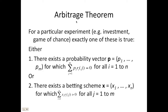Now we move to the Arbitrage Theorem. For a particular experiment, exactly one of two things is true: either there exists a probability vector p = (p_1, ..., p_m) for which the sum of p_i times r_i(j) equals zero for all i from 1 to n, or there exists a betting scheme vector x = (x_1, ..., x_n) for which the sum of x_i times r_i(j) is greater than zero for all j from 1 to m.